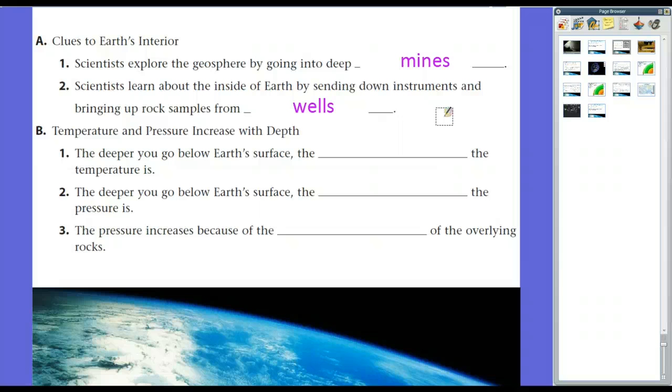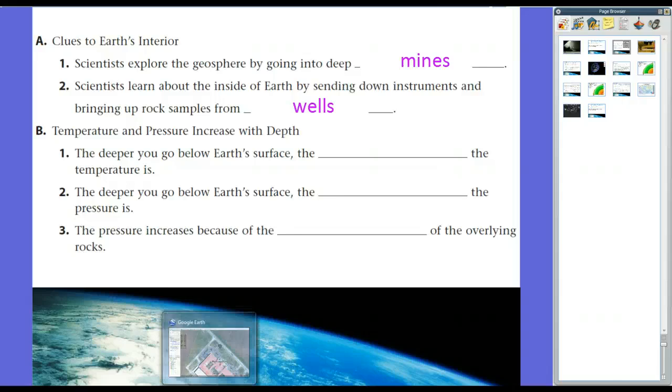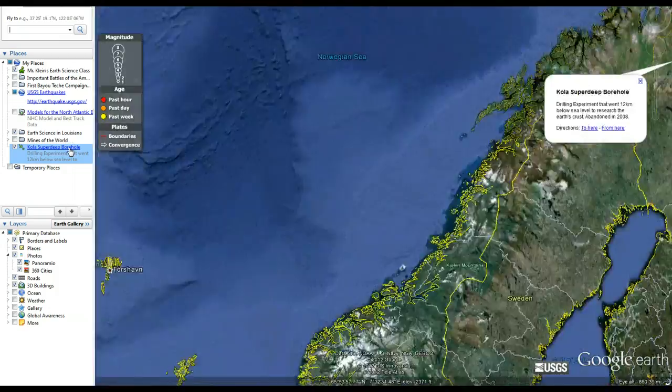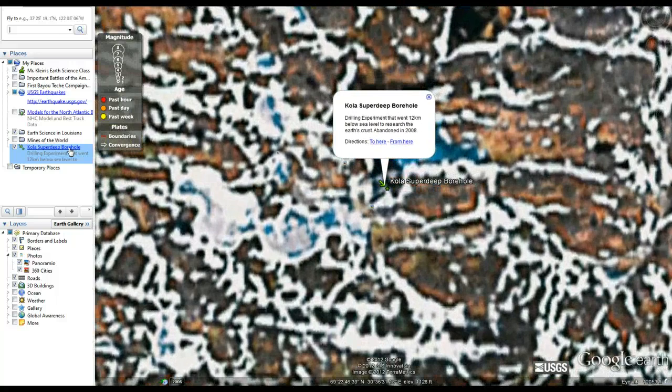And oil companies have drilled wells deeper and deeper into the Earth. And the Russians, over time, decided to see how deep they could go. And so they built a well, a drilling rig, up in northern Russia that went about 7.6 miles deep, or 12.3 kilometers below the ground. And that's at the Kola Superdeep Borehole. So here we are at school. Like I said, it was a drilling experiment that went 12 kilometers, or over 12,000 meters below sea level, to research the Earth's crust.